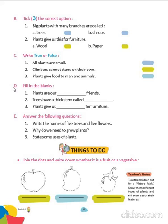Now come to Exercise D — fill in the blanks. Plants are our green friends. Trees have a thick stem called a trunk. Plants give us wood for furniture.